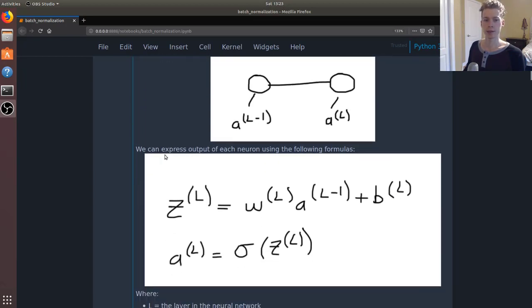We can express the output of each neuron using the following formula. Recall how the output of a neuron, which we're going to call A to the L minus 1, is multiplied by the weight along that edge and then we're going to add a bias.